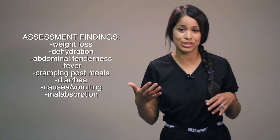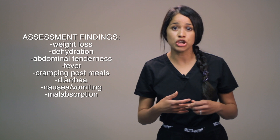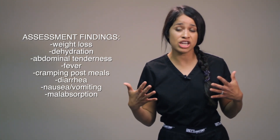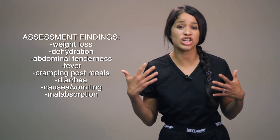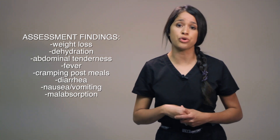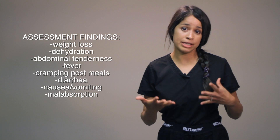Moving on to Crohn's disease — an inflammatory disorder different from ulcerative colitis because it affects any location of the GI tract from mouth to anus. It can occur at any age between 10 and 30. Inflammation involves the entire intestinal wall, and bowel obstruction is possible. Bloody stools are less common; instead, fatty stools called steatorrhea may occur. Assessment findings include weight loss, dehydration, abdominal bloating, right lower quadrant tenderness if the ileum is inflamed, fever, cramping after meals, colicky discomfort, diarrhea, nausea, and vomiting. Malabsorption of vitamin D, vitamin B12, and folic acid is also common.